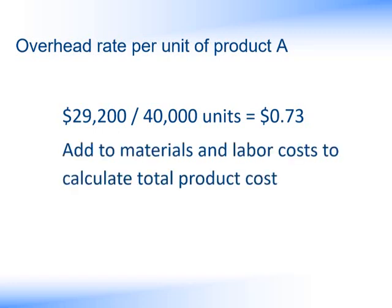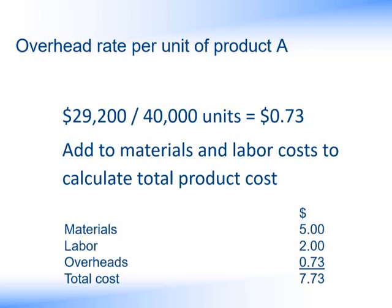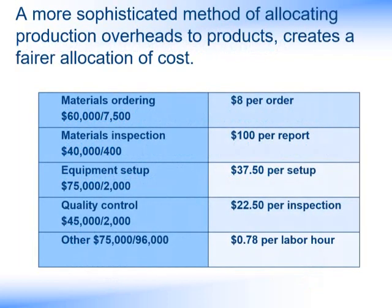Taking our $29,200 of overhead and dividing by the 40,000 units produced of product A, we arrive at an overhead rate per product of $0.73 or 73 cents. Adding the materials and the labour costs, we calculate the total product cost: materials, plus labour, plus overheads, gives a total cost of $7.73. What we've done by using activity-based costing is adopted a more sophisticated method of allocating production overheads to products, creating a fairer allocation of cost. Instead of taking total overheads and using a single rate, we've broken it down into more appropriate cost pools using the most appropriate basis for each classification — number of materials ordered, number of inspections, etc. This process gives us a much fairer allocation of costs and helps with pricing decisions more effectively.